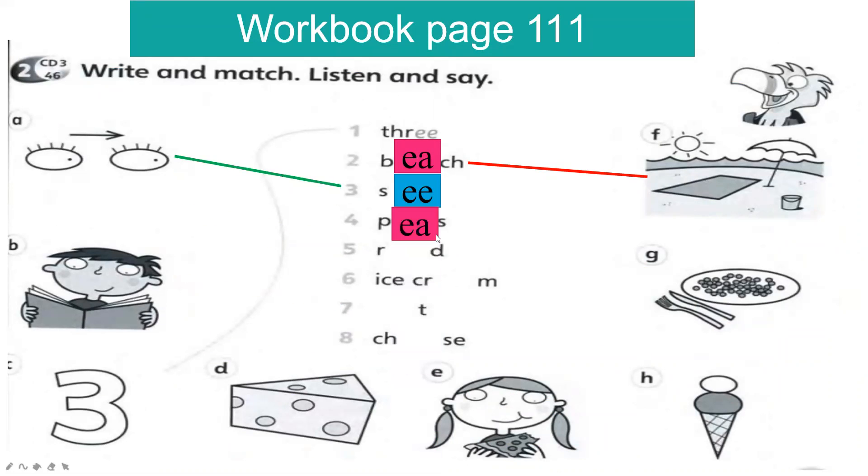Number four, 'peas.' We have the 's' because we have a lot of peas here, green peas. Number five, 'read.' Boys and girls, I want to remind you all here, when you match with different words, please use different colors so that it's easy to do. Number six, 'ice cream.' Number seven, 'eat.' Number eight, 'cheese.'